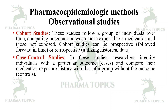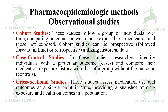Next are case-control studies. Researchers identify individuals with a particular outcome — the cases, for example smokers — and compare their medication exposure history with a group without that outcome, for example whether they have lung cancer as the outcome. Cross-sectional studies assess medication use and outcomes at a single point in time, providing a snapshot of drug exposure and health outcomes in the population.